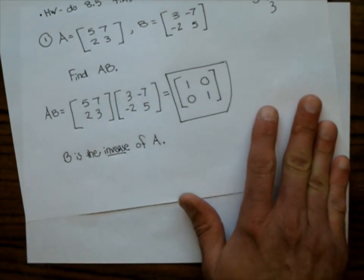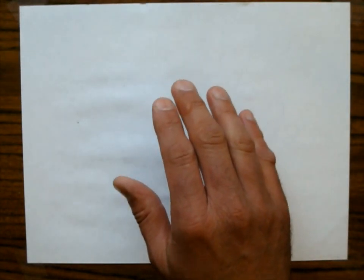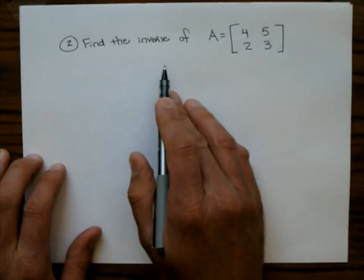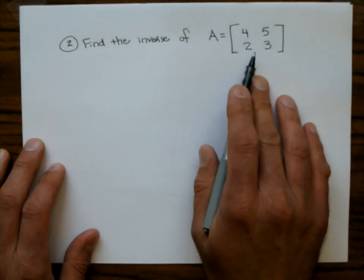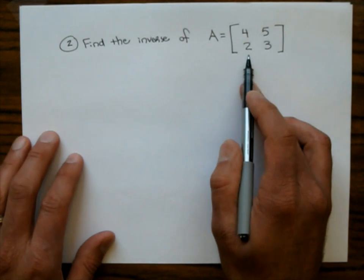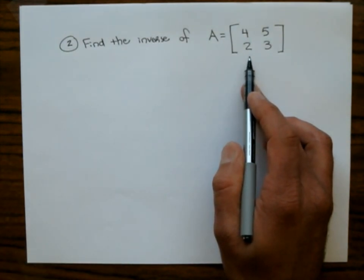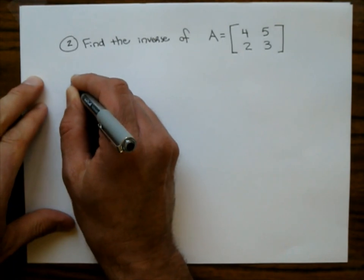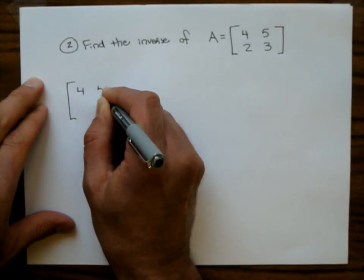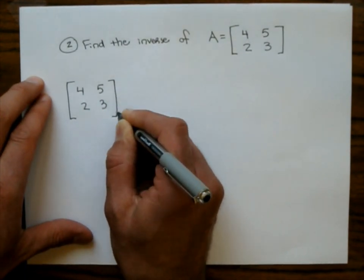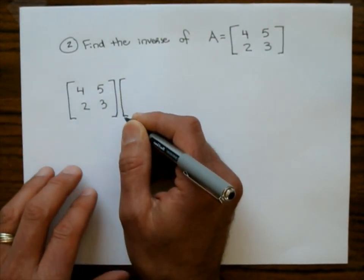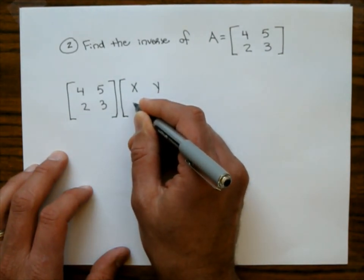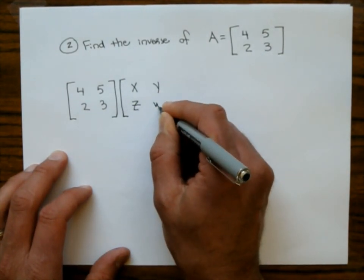Let's go ahead and find the inverse of a 2x2 matrix — that is the goal of section 8.4, and we'll show an application at the end. So find the inverse of this matrix. I don't know what it is, so when you don't know something in math, you make it equal to a variable. I'll write the matrix [4, 5, 2, 3] and let the unknown inverse matrix have entries x, y, z, w.